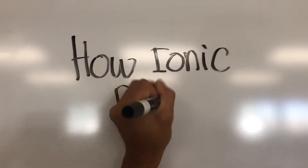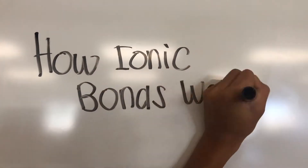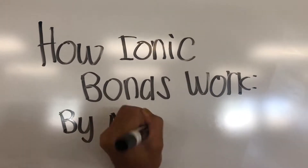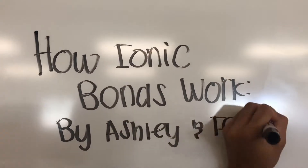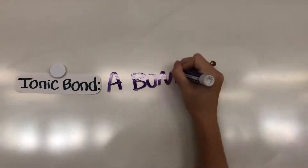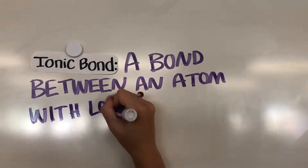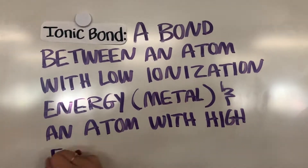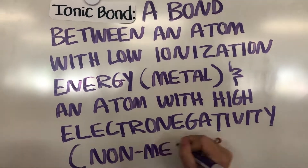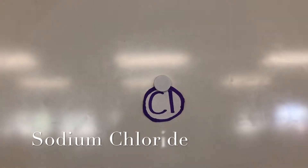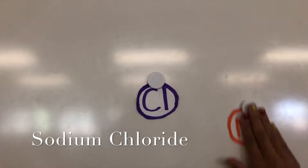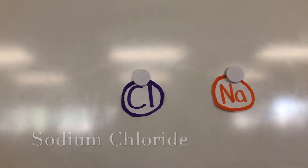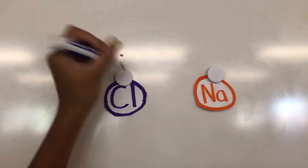How Ionic Bonds Work by Ashley and Teal. An ionic bond is between a metal and non-metal. For example, sodium chloride is an ionic bond.